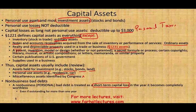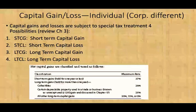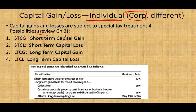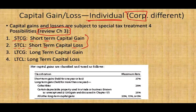When you sell a capital asset — and we are talking about individuals, not corporations, as corporations have different rules — capital gains and losses are subject to special tax treatment. There are four possibilities: short-term capital gain, short-term capital loss, long-term capital gain, or long-term capital loss. Short-term means you held the asset for one full year or less.